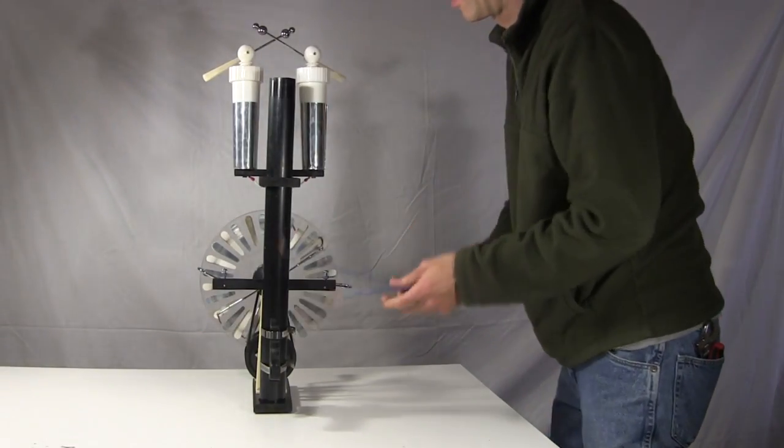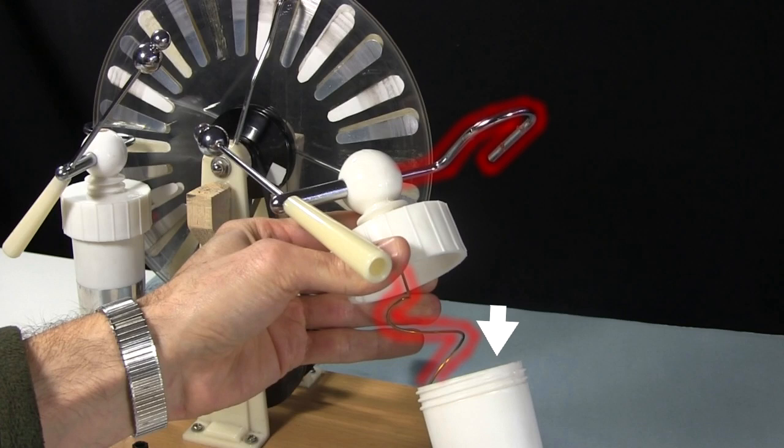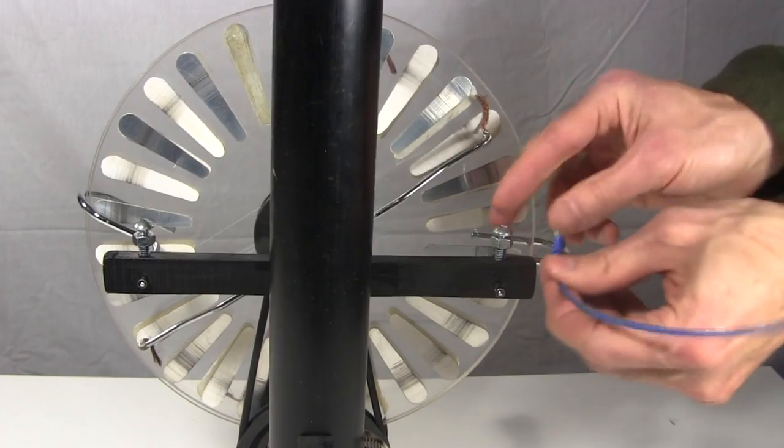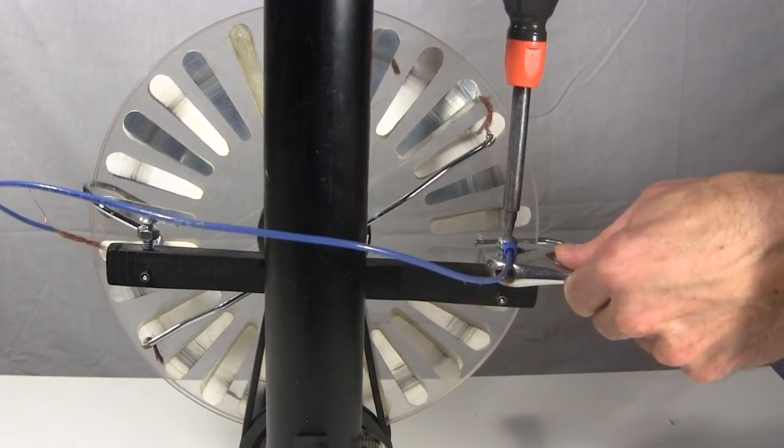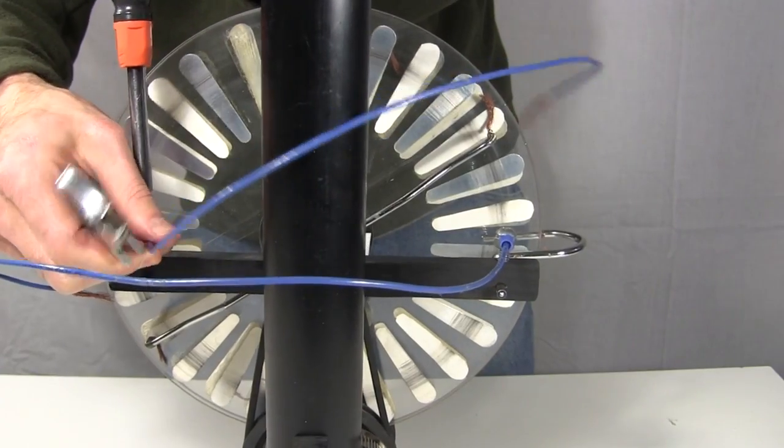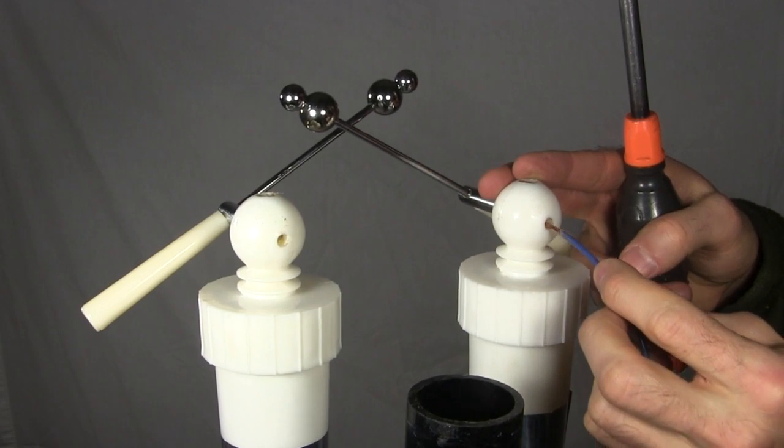But there was still some wiring to do. In a normal Wimshurst machine, the collectors are connected to the inner cylinder of the Leiden jars and a spark gap. So I attached one end of the wires to the collectors, and the other ends to the inner cylinder and spark gap.